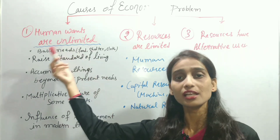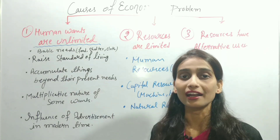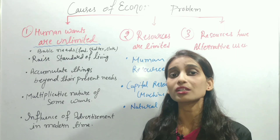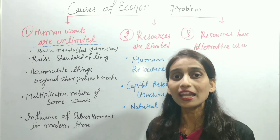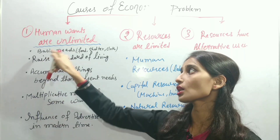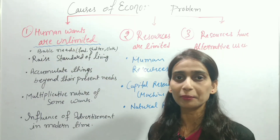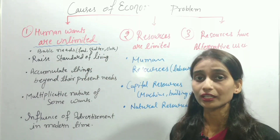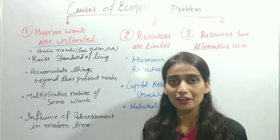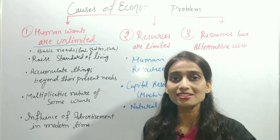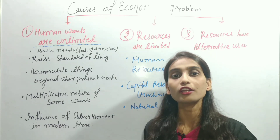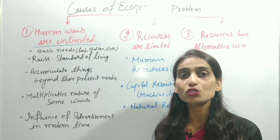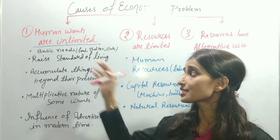Human wants are unlimited — this is the biggest cause of the central problem of economy. Human desires are never fully satisfied. First, there are basic needs: food, shelter, and clothing — these are essential. Second, people want to raise their standard of living. Every person wants to increase their standard of living — better comfort, more efficiency. If someone has a bike, they will want a bigger bike or a four-wheeler. So these desires keep raising the standard of living, and human wants keep increasing.